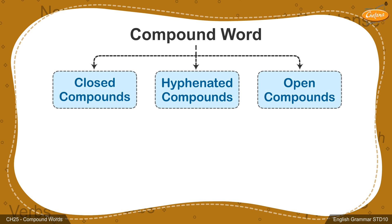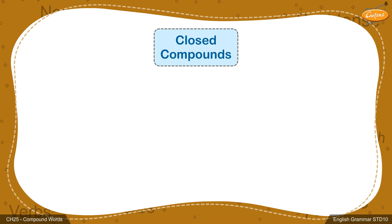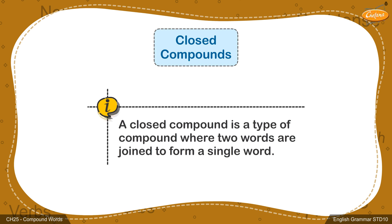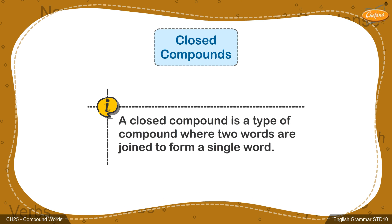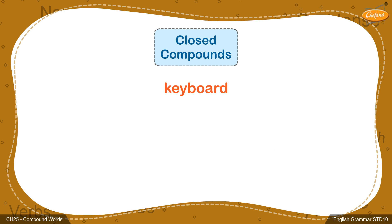There are three types of compounds. The first one is closed compounds. A closed compound is a type of compound where two words are joined to form a single word. For example, keyboard.